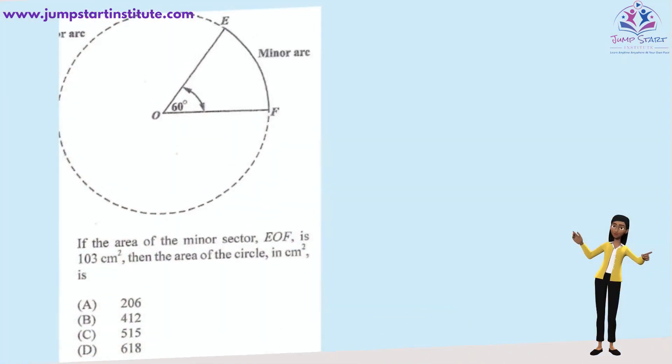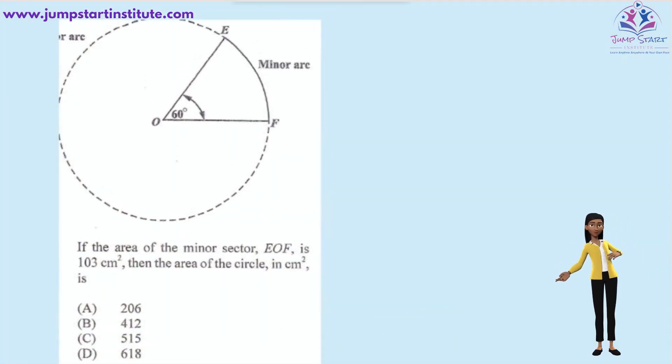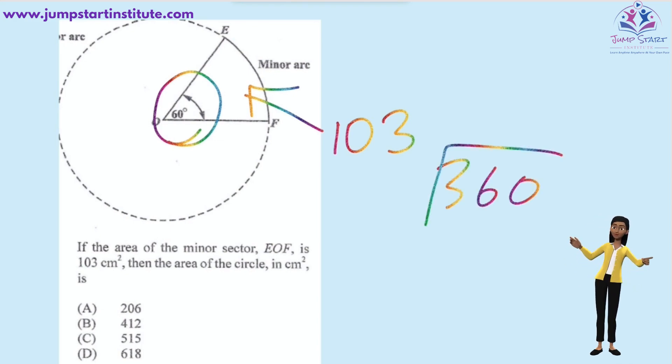If the area of the minor sector EOF is 103 centimeters squared, then the area of the circle in centimeters squared is? If you look closely, the angle here is 60 degrees. An entire circle will be 360 degrees. How many groups of 60 do we have in 360? That would be 6.